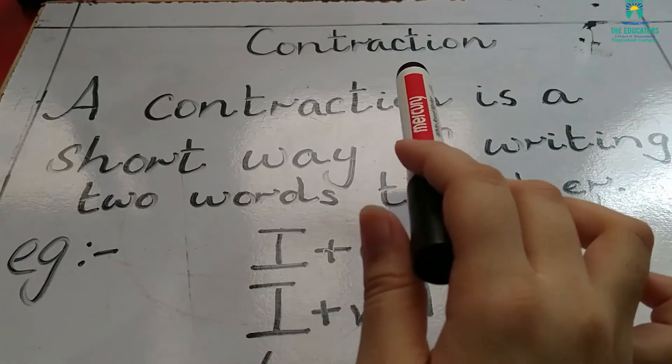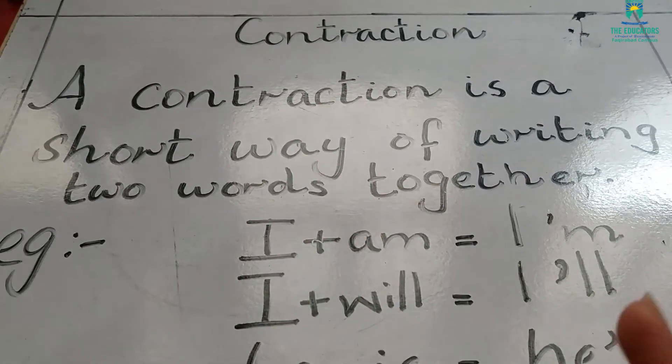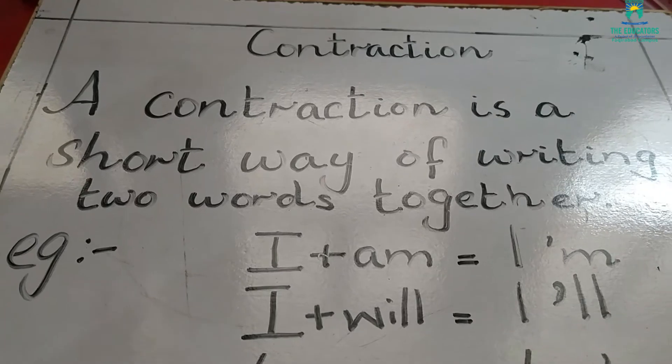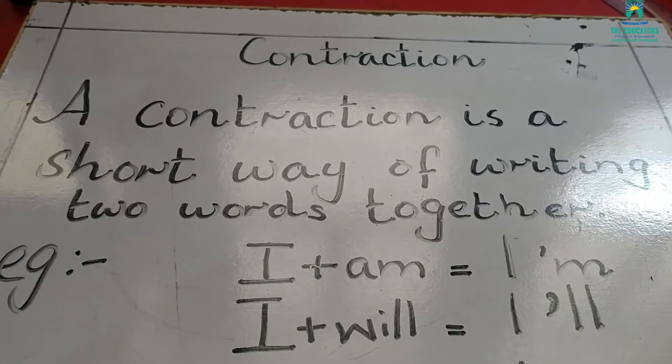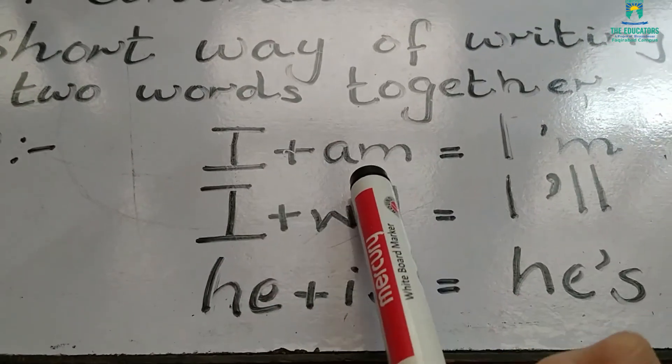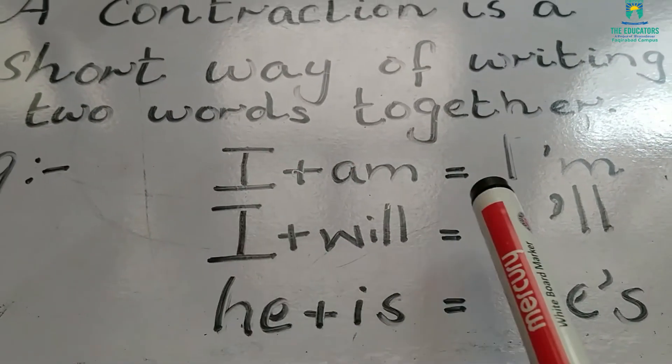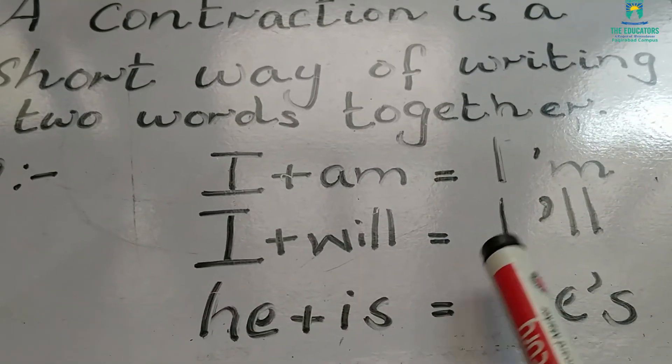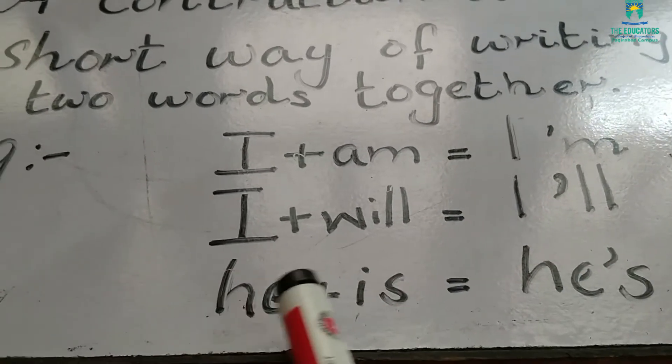Through contraction we can make any word short by putting a comma with it. For example, I am we can make it short like I'm, and I will can be shortened like I'll. He is becomes he's.